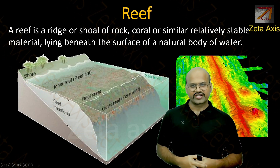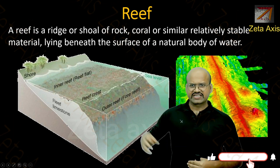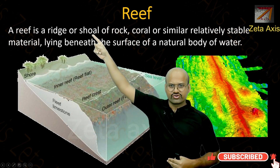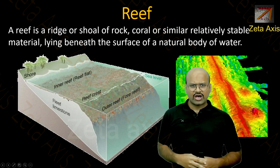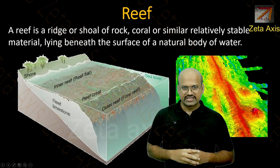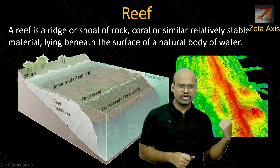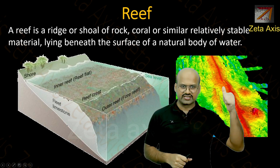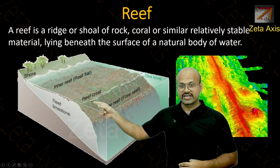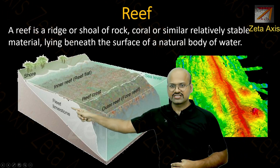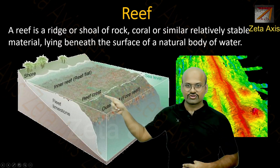The term 'coral reef' contains two words: coral and reef. A reef is a ridge or a shoal of rock — relatively stable material lying beneath the surface of a natural body of water. On the surface of the earth, ridges are narrow and elevated structures. Here we can see a mid-oceanic ridge, which is an elevated structure within the sea. On the seashore, we can also see elevated structures — this region is slightly elevated from the surrounding area, and this is also a reef.